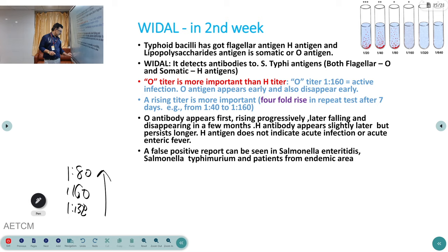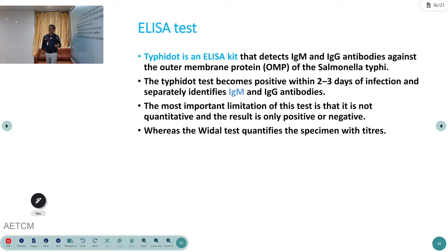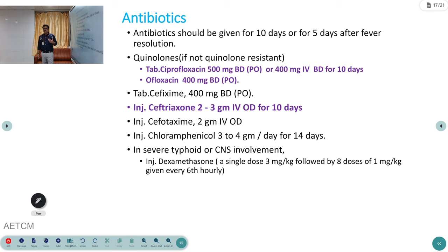An ELISA test is also available. IgM testing can be done in the early phases of infection, but not in the first week as antibodies will be negative. These tests should be performed after five to seven days.